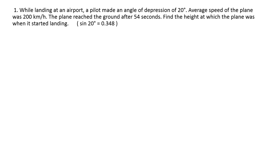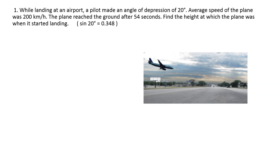First we will make a figure as per the given question. Here A is the position of the aeroplane. AC represents the line of vision, and AD represents the horizontal line. The angle formed by these two lines is given as 20 degrees. Segment AB represents the height of the plane from the ground — we have to find the length of AB. Now we join point B with C.